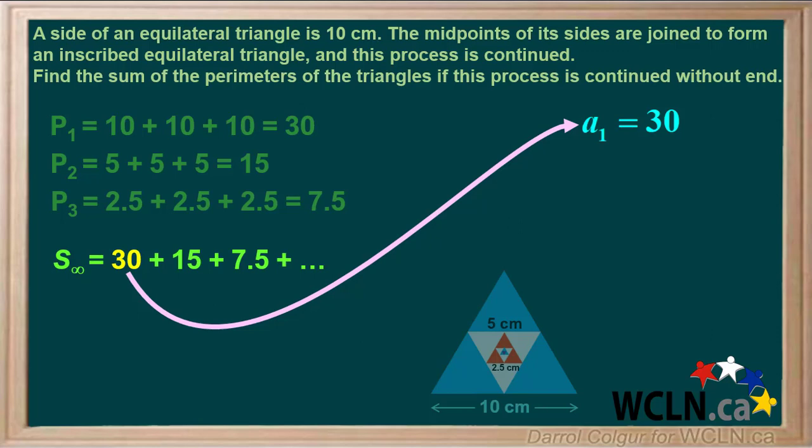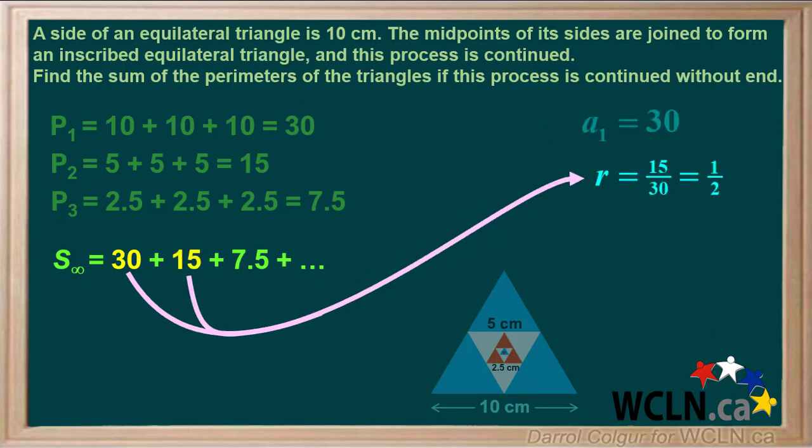The first term, A1, is equal to 30. And the common ratio, R, equals 15 over 30, or 1 half.